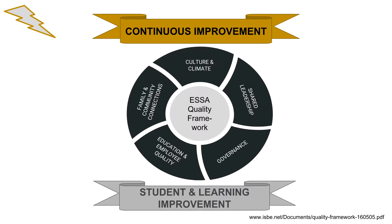The standards in the black segments make achieving our overall goals of continuous improvement and student and learning development — the gold and silver banners — possible. So, what do each of these seven standards actually mean for our students and our schools?